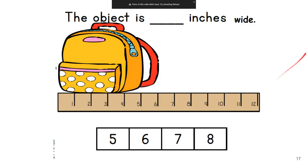Now let's check this last one. The object is blank inches wide. So remember, we're going to start from one side and we're going to go to the other. So how many inches wide is the backpack? Is it six? No, because remember, we're going to go from the yellow part of the backpack. It is five, five inches wide.